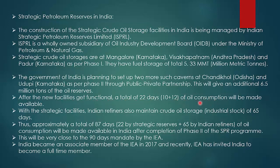The two new facilities under Phase 2 will give an additional 6.5 million tonnes of oil reserves. After the new facilities get functional, a total of 22 days of oil consumption will be available from strategic reserves. Indian refiners also maintain crude oil storage and industrial stock of 65 days. Thus, approximately 87 days total — 22 from strategic reserves and 65 from Indian refiners — will be available after completion of Phase 2 of the SPR program, which will be very close to the IEA's 90-day mandate.